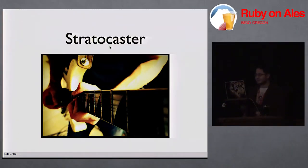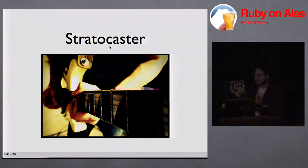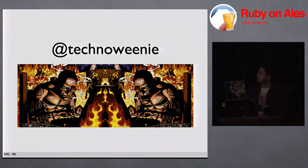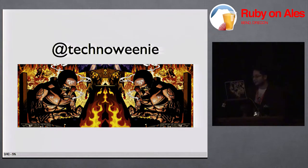Good morning. We're going to talk about Stratocaster — it's the new backend for GitHub. I'm Rick Olson, I go by TechnoWinni online, and I'm the animated GIF artist at GitHub. I also write Ruby sometimes, but mostly animated GIFs.